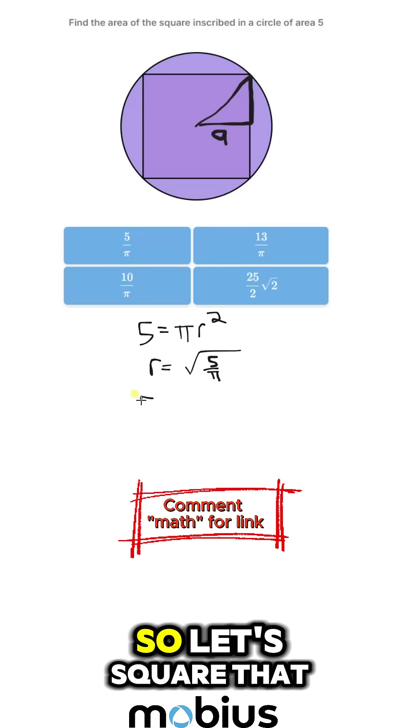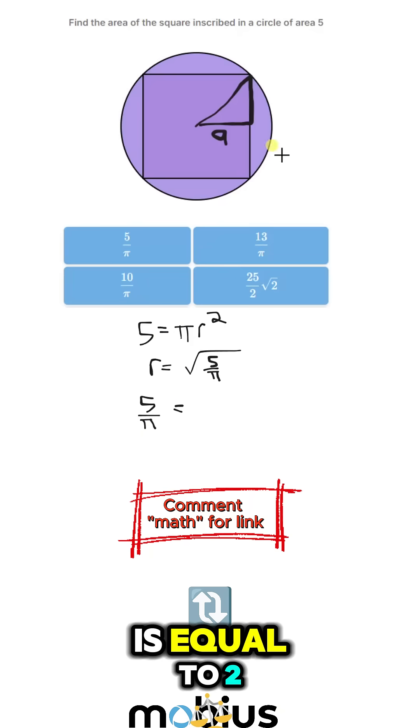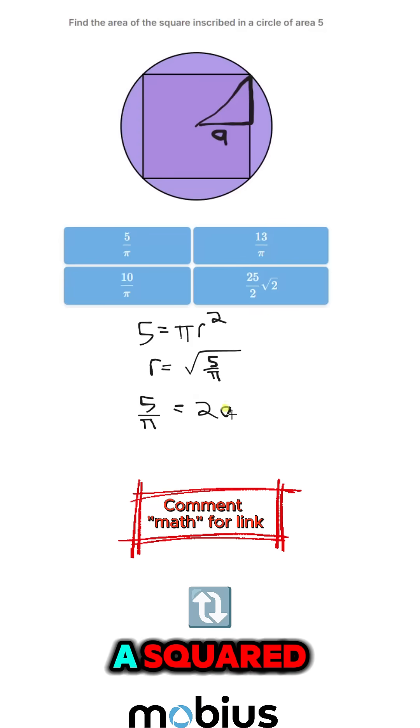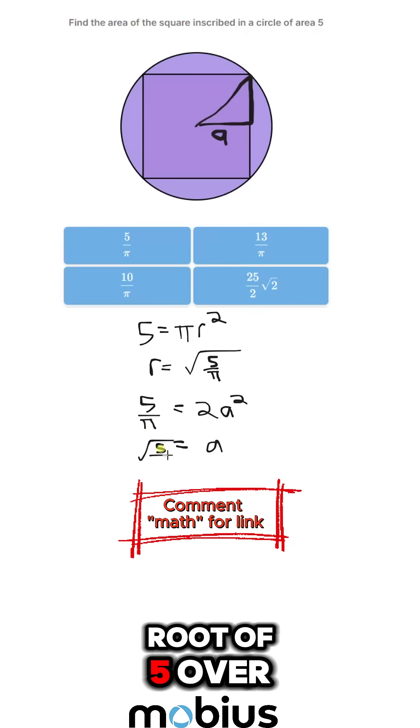So let's square that out. So 5 over pi, which is r squared, is equal to 2a squared. So a is equal to the root of 5 over 2 pi.